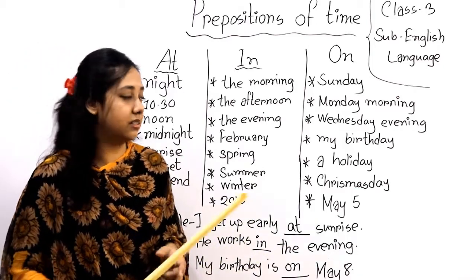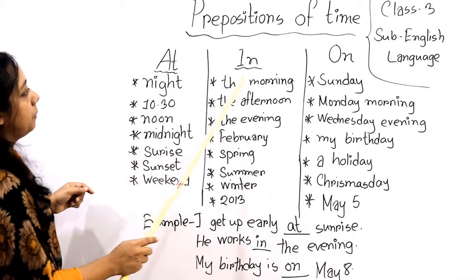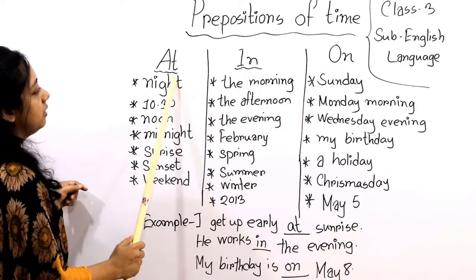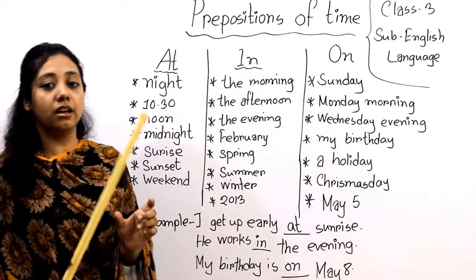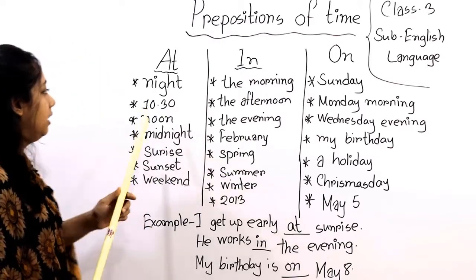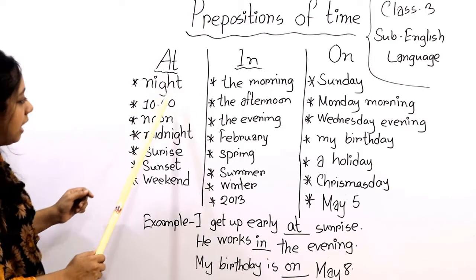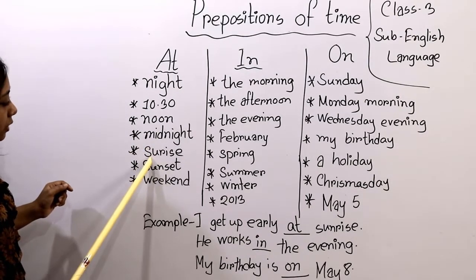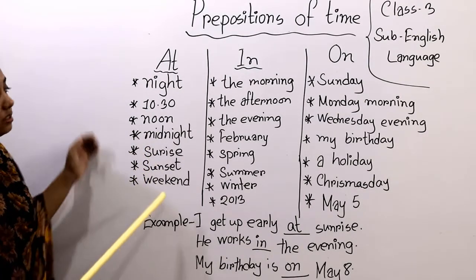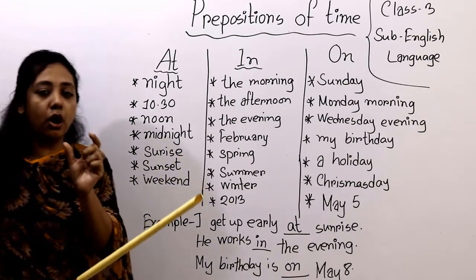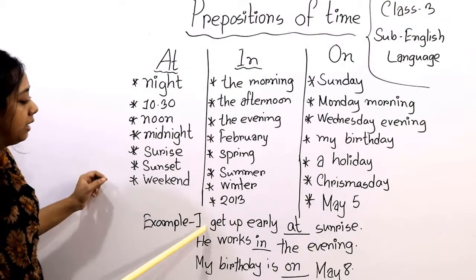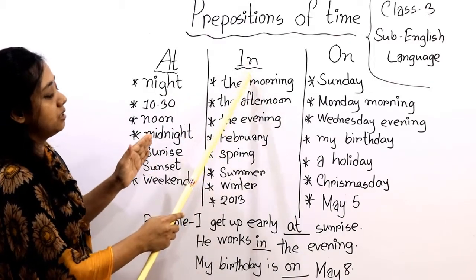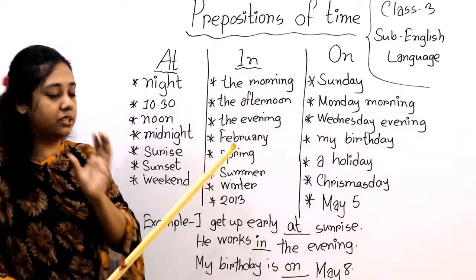Look, these are prepositions of time: at, in, on. These prepositions indicate a specific time. 'At' sits before a very short time — like at six, at night, at noon, at midnight, at sunrise, at sunset, at the weekend. For example: I get up early at sunrise.